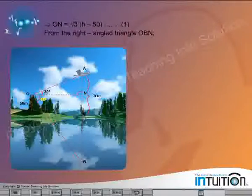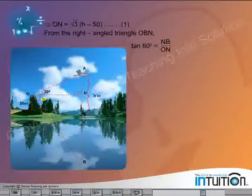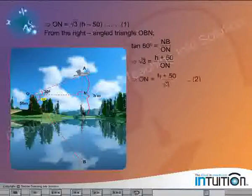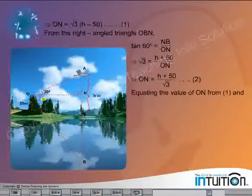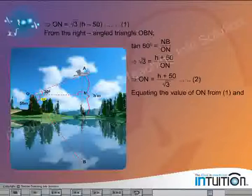From the right-angled triangle OBN, tan 60 degrees is equal to NB by ON, which implies root 3 is equal to h plus 50 divided by ON, which implies ON is equal to h plus 50 divided by root 3. Equation 2.